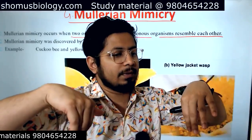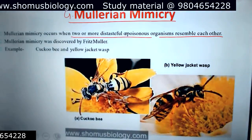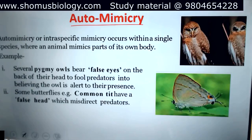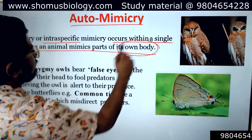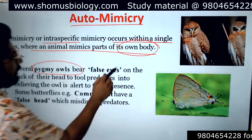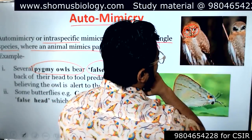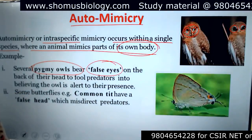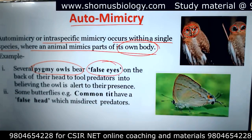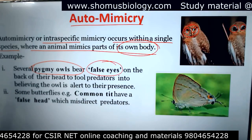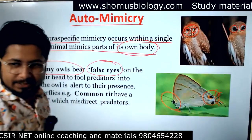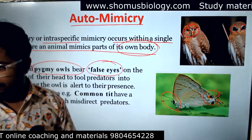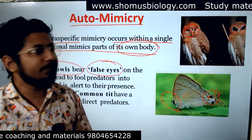Automimicry occurs when an animal mimics parts of its own body. For example, the Pygmy Owl has a false eye on the back of its head — this is the normal eye, and this is the back side of the head that looks like an eye. Another example is the false head, where at the end of the wing, viscule-like structures and black pigmentation make it seem like there are two heads on both sides.